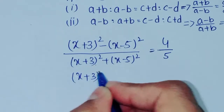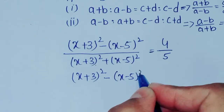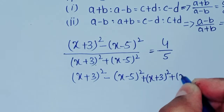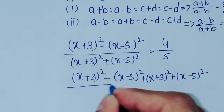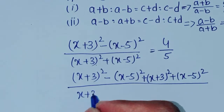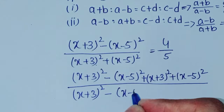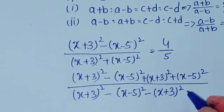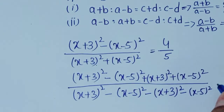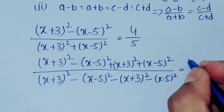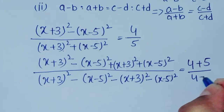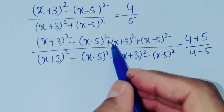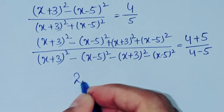Applying componendo-dividendo: we take a plus b as x plus 3 whole square minus x minus 5 whole square, plus x minus 5 whole square, and a minus b as x plus 3 whole square plus x minus 5 whole square minus x minus 5 whole square. This equals c plus d over c minus d, which is 4 plus 5 over 4 minus 5.